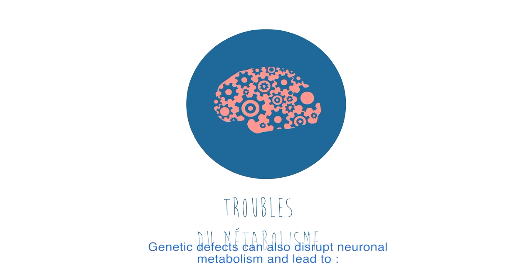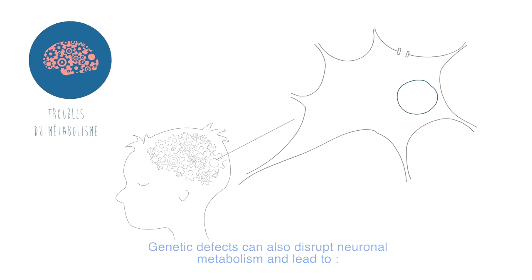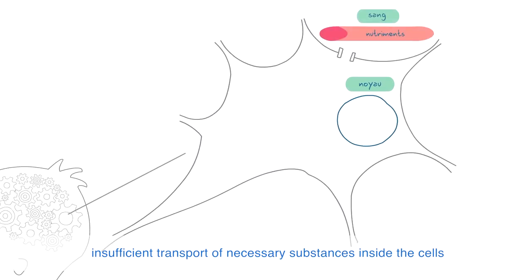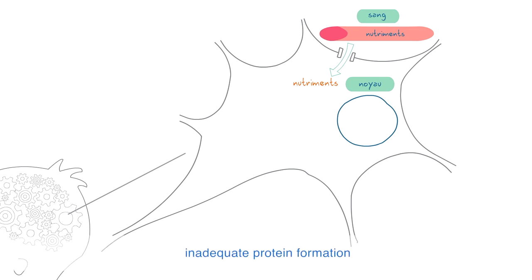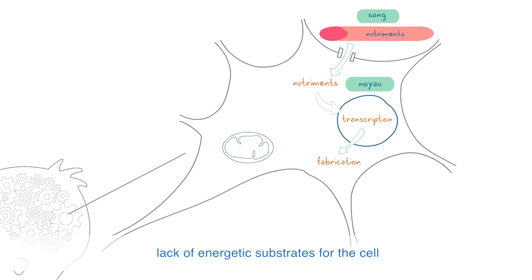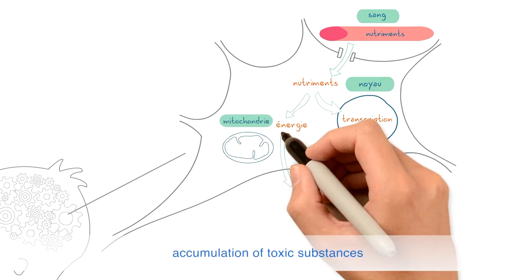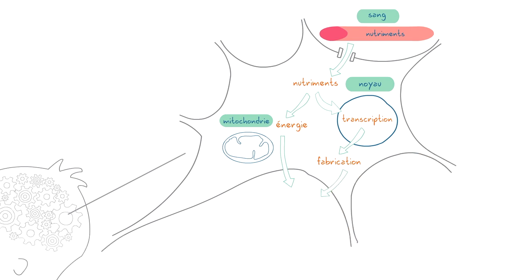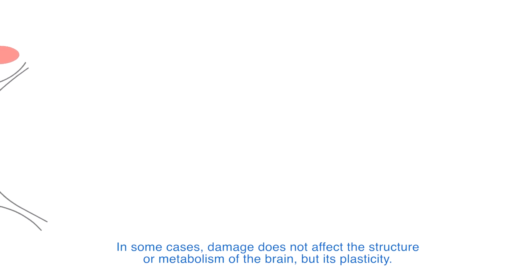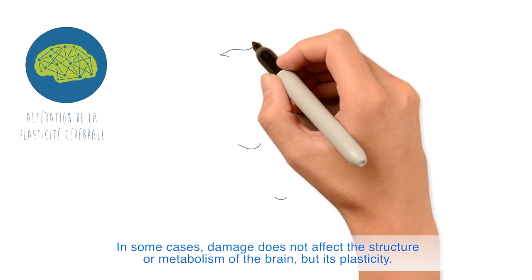Genetic defects can also disrupt neuronal metabolism and lead to: insufficient transport of necessary substances inside the cells; inadequate protein formation; lack of energetic substrates for the cell; and accumulation of toxic substances. In some cases, damage does not affect the structure or metabolism of the brain, but its plasticity.